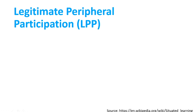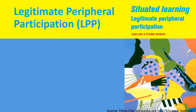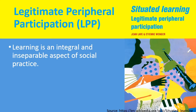One more concept given by Lave and Wenger is legitimate peripheral participation. In their book 'Situated Learning: Legitimate Peripheral Participation,' they proposed that learning is an integral and inseparable aspect of social practice. Whenever there is a social practice and people are interacting in society, learners are learning. You cannot separate learning from social practices.